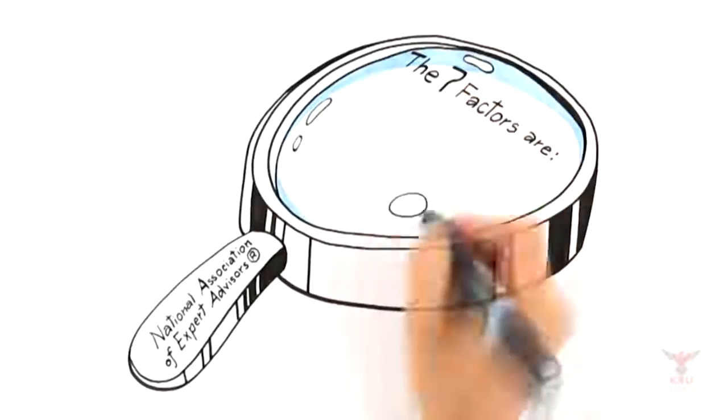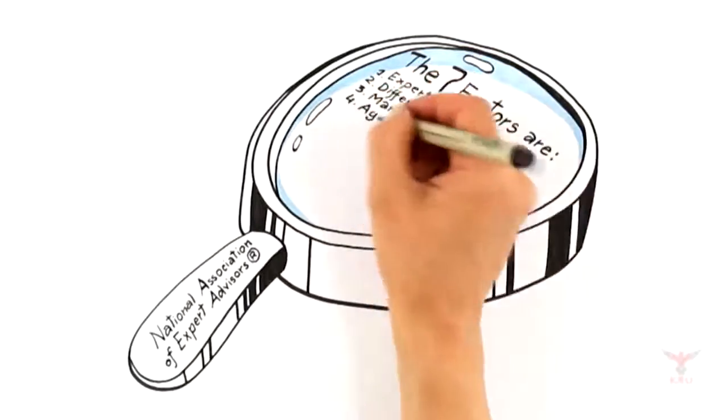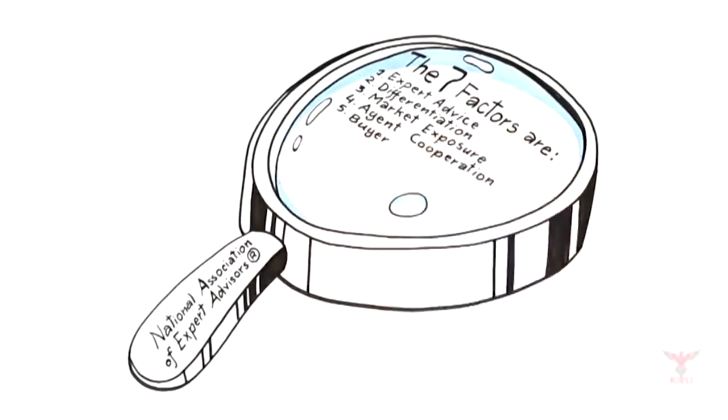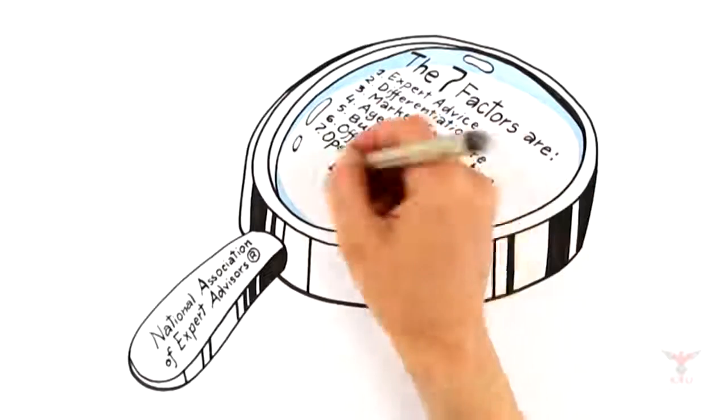The seven factors are: expert advice, differentiation, market exposure, agent cooperation, buyer acquisition, offer negotiation, and operational execution.